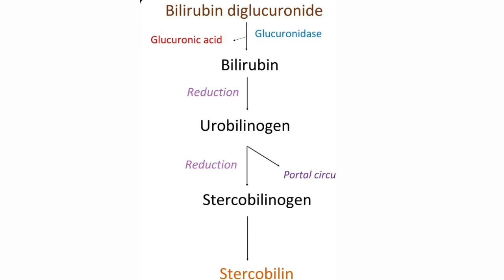Out of 100% of urobilinogen formed, 20% is absorbed from the gut into the portal circulation. This urobilinogen has two fates: some part is returned to the liver through the hepatobiliary route and reaches the intestine again — this is called enterohepatic circulation. The remaining urobilinogen enters the systemic circulation and is transported to the kidneys, where it is oxidized to a colored product, urobilin, and excreted in the urine. The normal color of urine is due to urobilin.